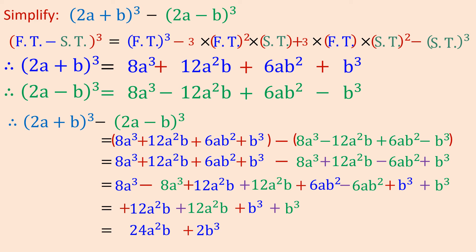Now the next step: we simplify. We have 8a³ minus 8a³ — collecting those terms together. Then we have plus 12a²b and plus 12a²b — the blue and green 12a²b terms. Then plus 6ab² and minus 6ab². Then plus b³ and plus b³. I am grouping same terms together with whatever sign they have.